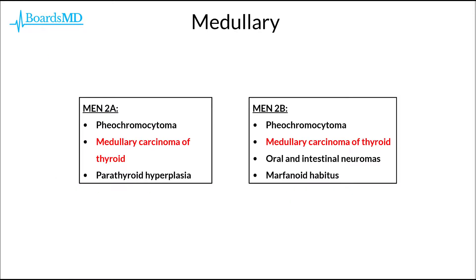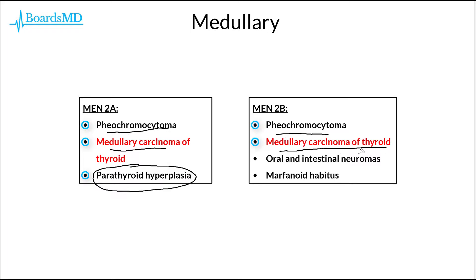Just to briefly review our MEN syndromes: in MEN 2A, our classic features are going to include pheochromocytomas, medullary carcinoma of the thyroid, as well as parathyroid hyperplasia. Whereas in MEN 2B, we may see pheochromocytomas as well as medullary carcinoma of the thyroid, but these patients may also characteristically have oral or intestinal neuromas, as well as a marfanoid habitus, in which they have some physical exam features of Marfan syndrome, such as elongated limbs and tall stature.